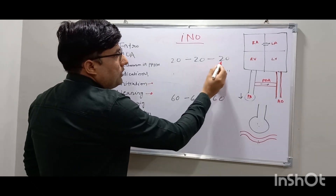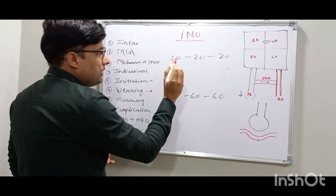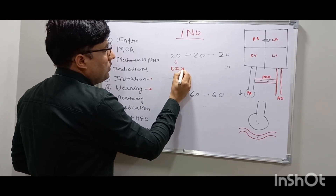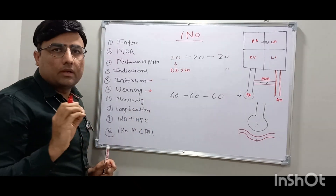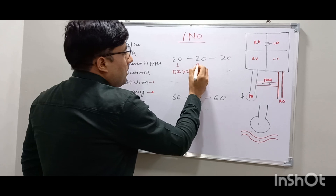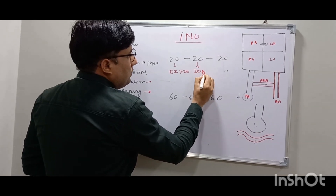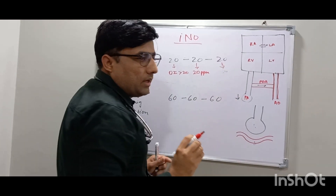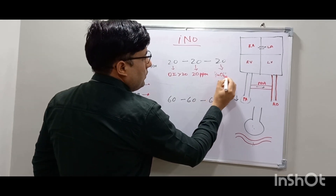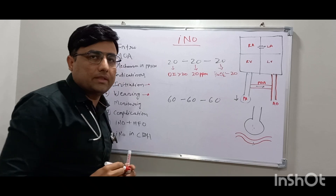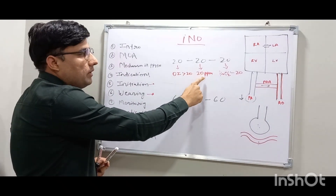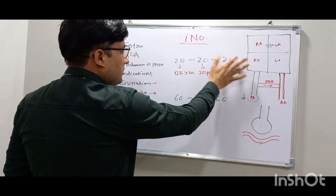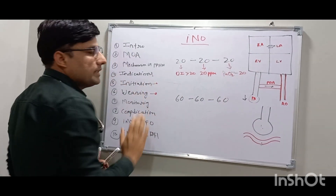There is a 20-20-20 formula for initiation of Inhaled Nitric Oxide. The first 20: initiate iNO when the oxygenation index (OI) is more than 20. The second 20: start at a dose of 20 ppm (20 parts per million). This is the 20-20-20 rule for initiation of Inhaled Nitric Oxide.